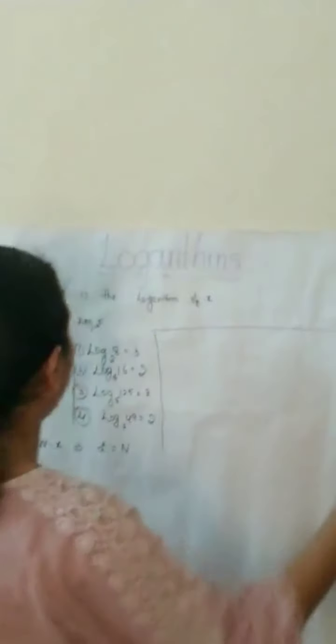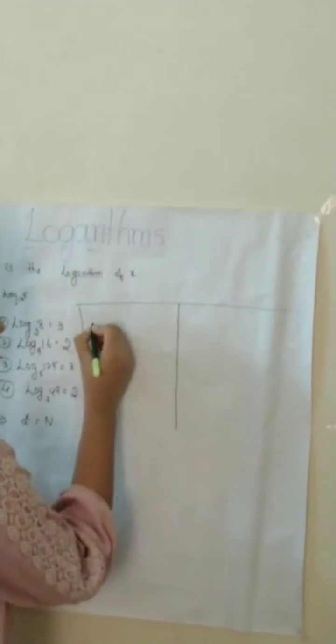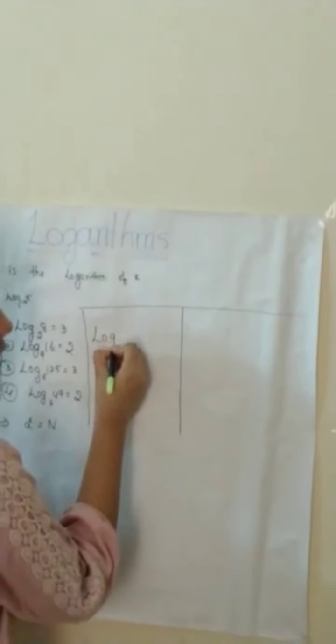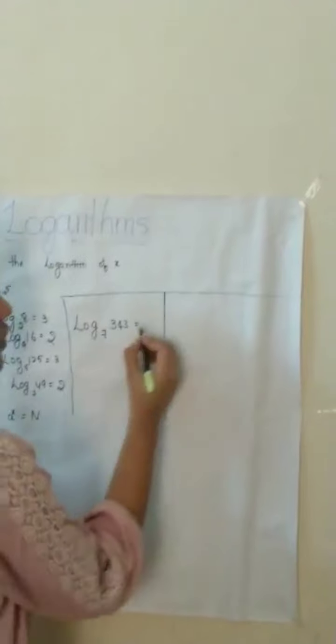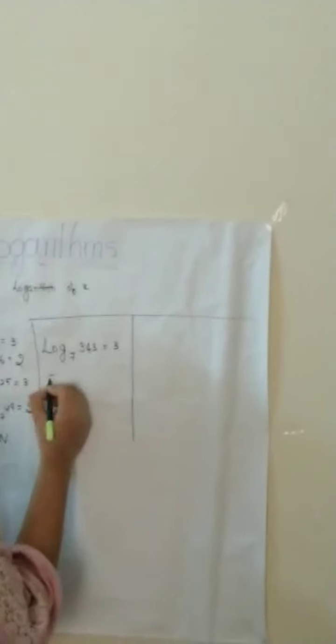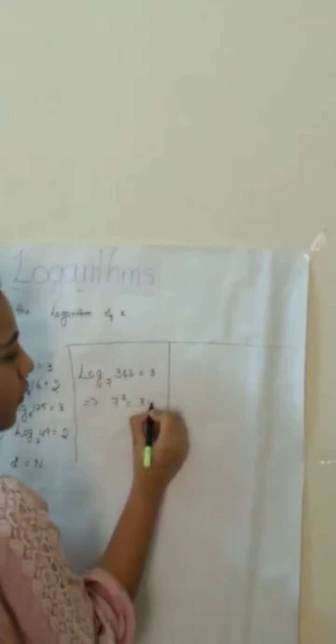Now, we convert the written logarithmic form into exponential form. Log 343 base 7 equals 3 implies 7 cube equals 343.